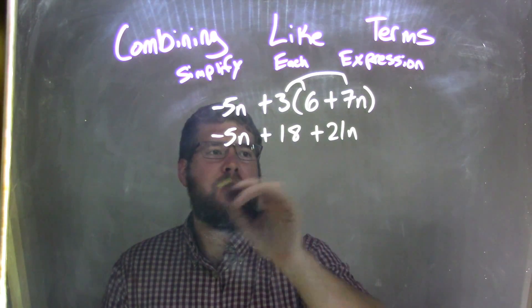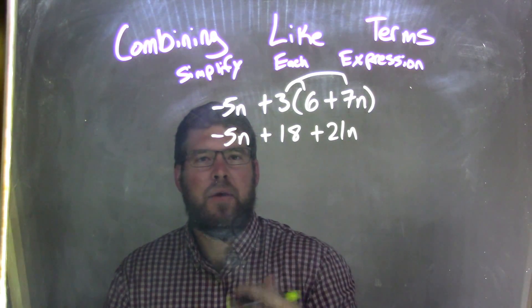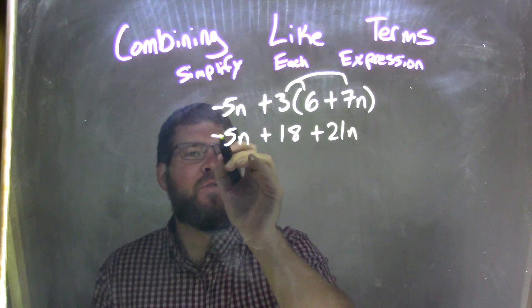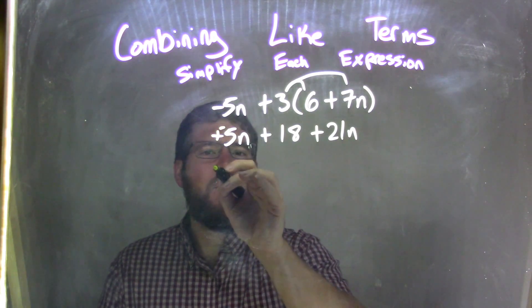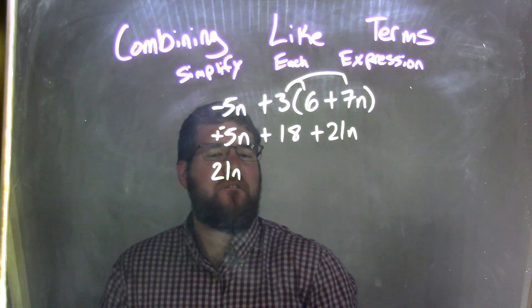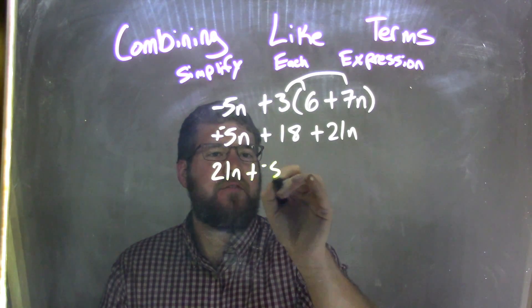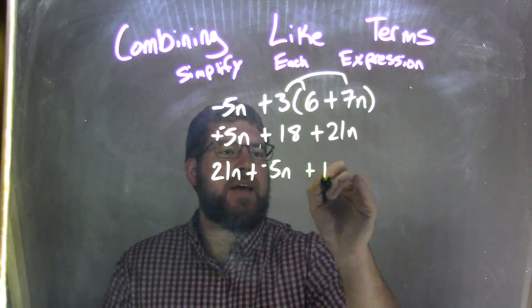The 21n and the 5n, 21n and the 5n I'm going to put next to each other. So I know that minus 5n is like plus a negative 5n, so I'm going to put the 21n first plus a negative 5n plus 18, okay?